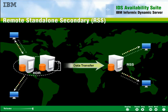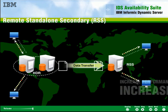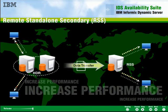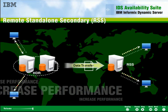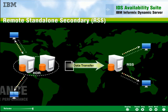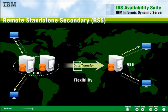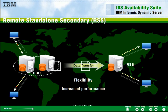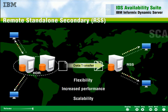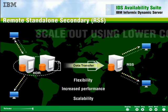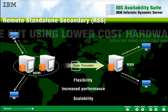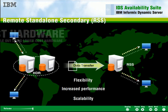These servers are also available to offload transactions to increase performance. The shared disk SDS and remote RSS servers can be configured in any combination, providing true flexibility, increased performance, and scalability on demand. Lower cost hardware can be used to scale out and improve high availability.